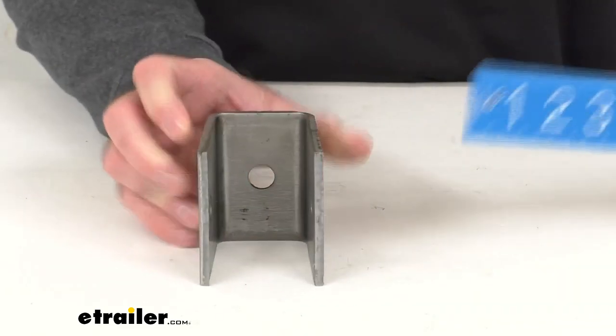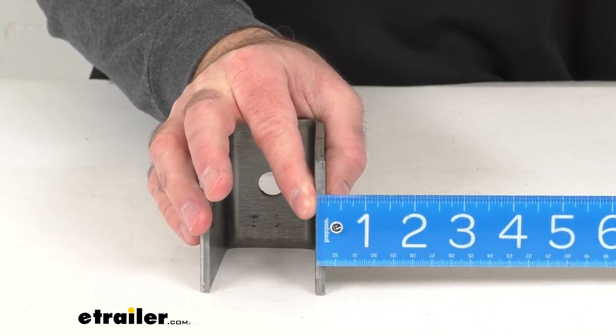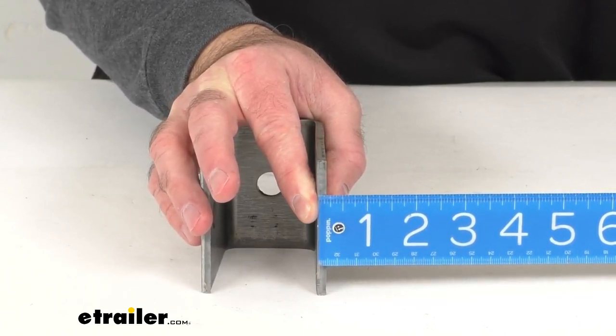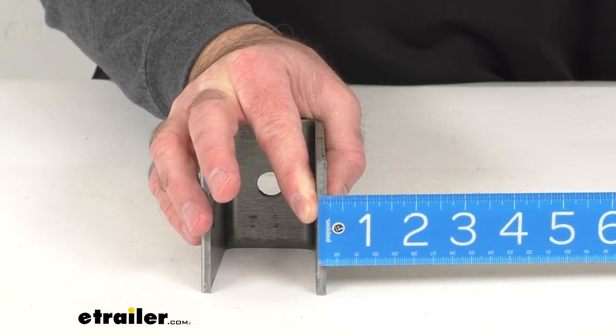And then you might be wondering about the thickness of this hanger. Looking at just the thickness there, we're sitting right at three sixteenths of an inch thick.